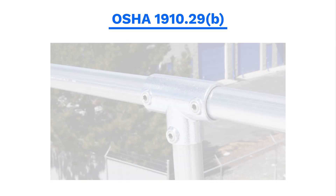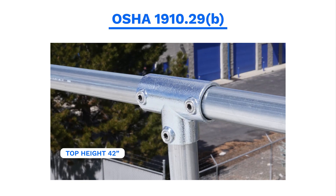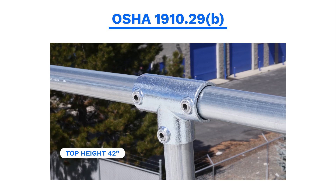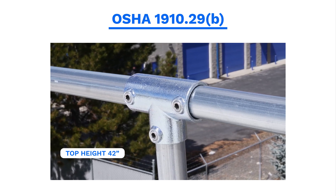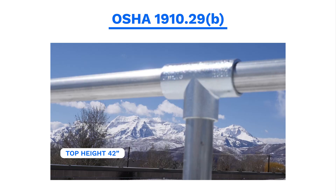What are the major requirements from OSHA 1910.29b? The top height of the top rails must be 42 inches, give or take 3 inches, above the walking working surface.